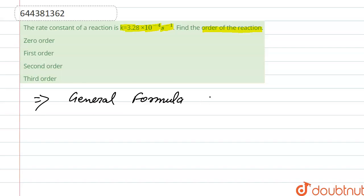General formula to find the unit of rate constant, that is k equals mol liter inverse 1 minus n second inverse, where n is the order of the reaction.